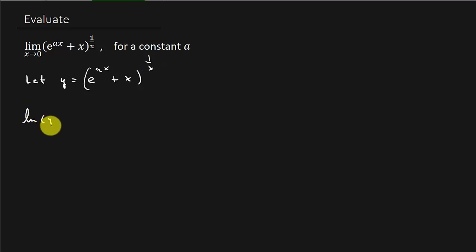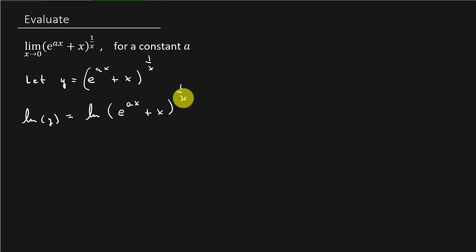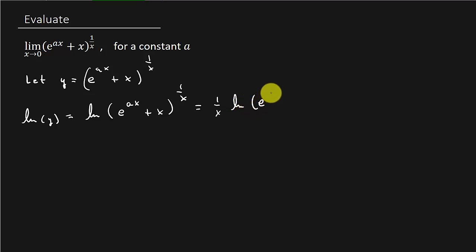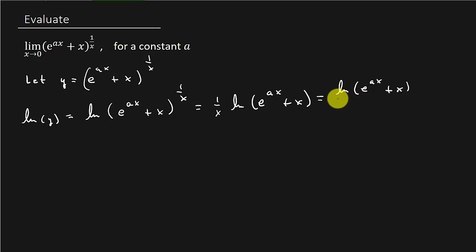So now let's take the natural log of both sides of this equation here. We have a logarithm rule that says we can take this exponent and move it down in front. So that's going to be 1 over X times the natural log of E raised to the AX plus X, which equals the natural log of E to the AX plus X over X.